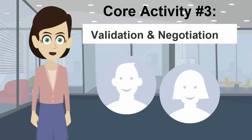Core activity 3: Validation and Negotiation. This activity is all about ensuring that what you have documented as requirements are valid and agreed by all stakeholders involved. This activity often involves continuous clear communication and negotiation with stakeholders.